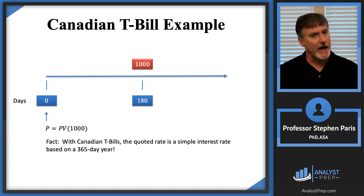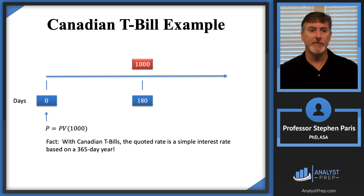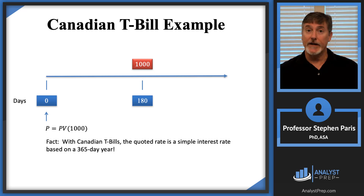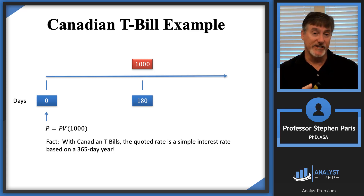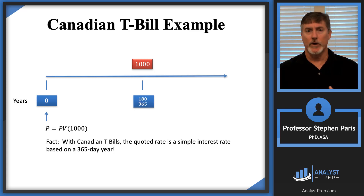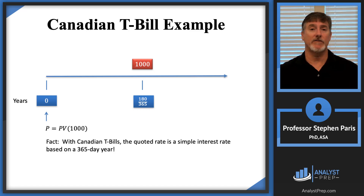This is the major fact you need to keep in mind with Canadian T-bills: the quoted rate is going to be a simple interest rate based on a 365-day year. So the first thing we need to do is change the days on our timeline to years and rescale the 180. When we change to years, the 180 days becomes 180/365 years, because the convention is based on a 365-day year.